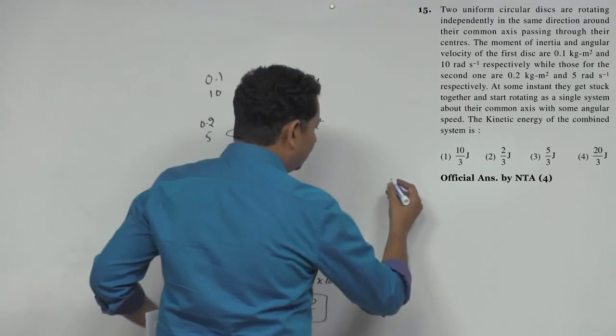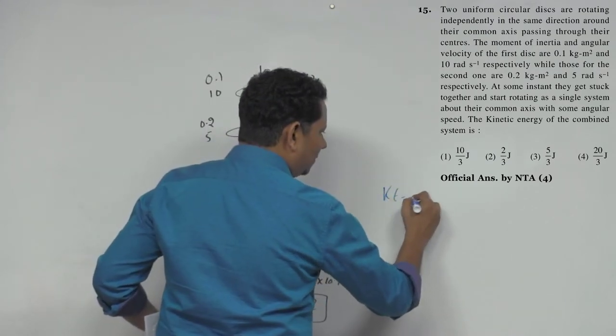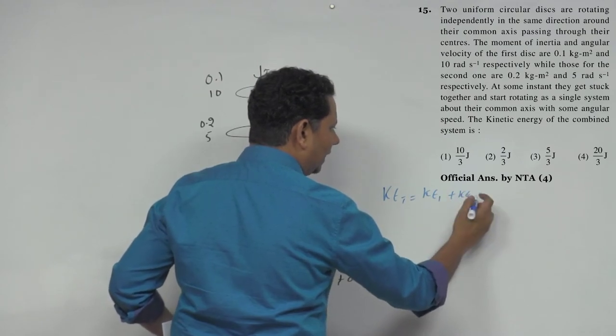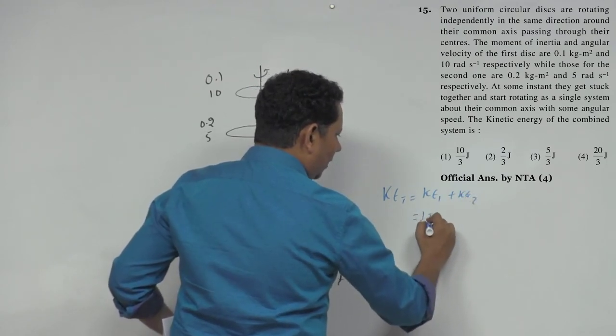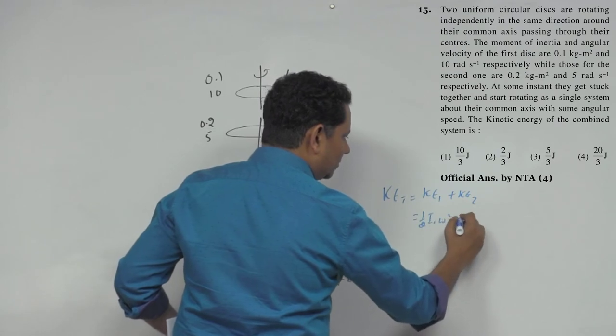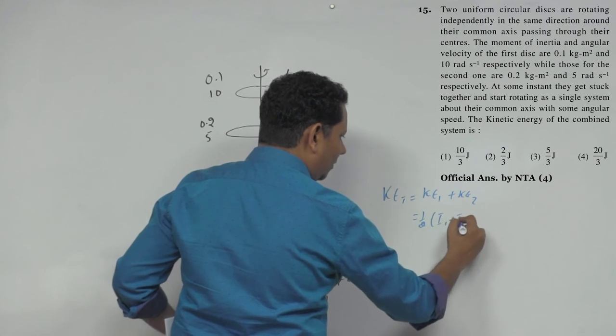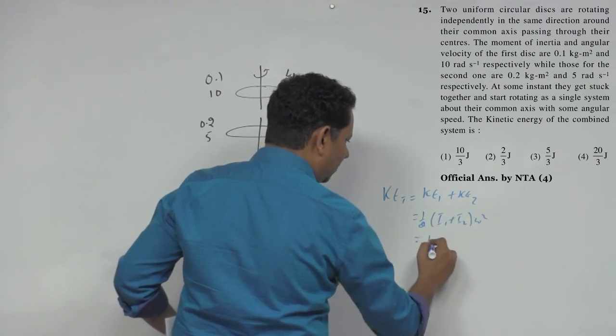For kinetic energy, it will be equal to half times I1 plus I2 times omega squared.